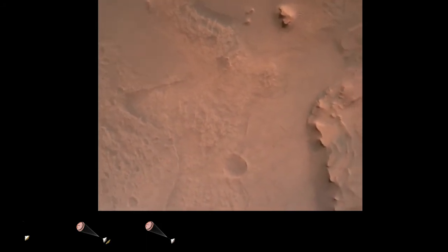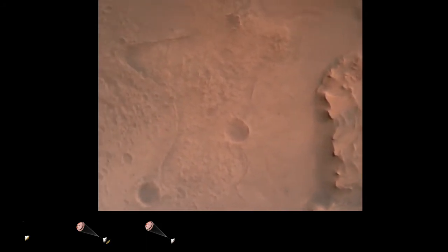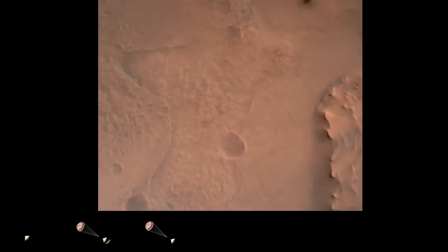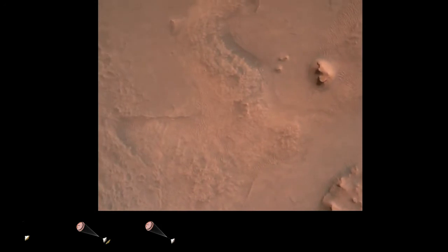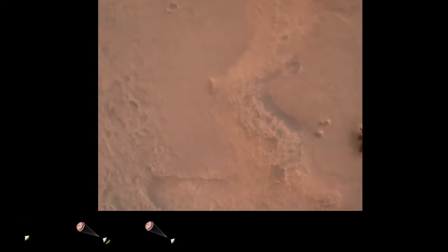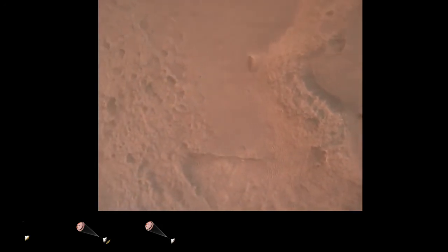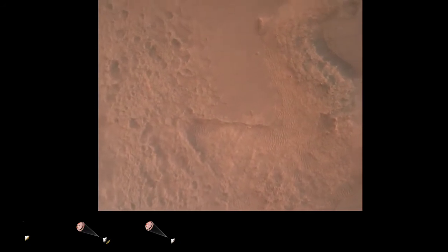Perseverance is continuing to descend on the parachute. We are coming upon the initialization of terrain relative navigation and, subsequently, the priming of the landing engines. Current velocity is about 90 meters per second at an altitude of 4.2 kilometers.